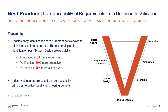The real key here is that with live traceability in place, issues are reduced and those that do arise are found earlier in the process. Based on data from industry sources, finding issues earlier can save 16 to as much as 110 times the cost of not finding them until later in the process.